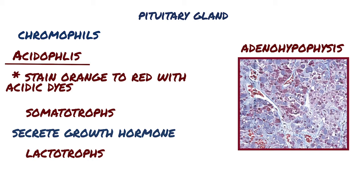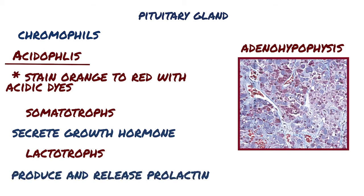Lactotrophs, the other variety of acidophils, produce and release prolactin, which promotes mammary gland development during pregnancy, as well as lactation after birth.